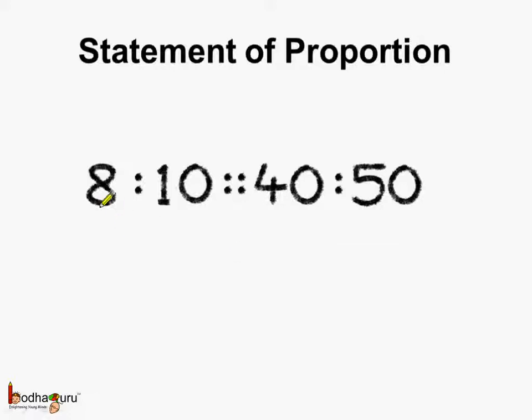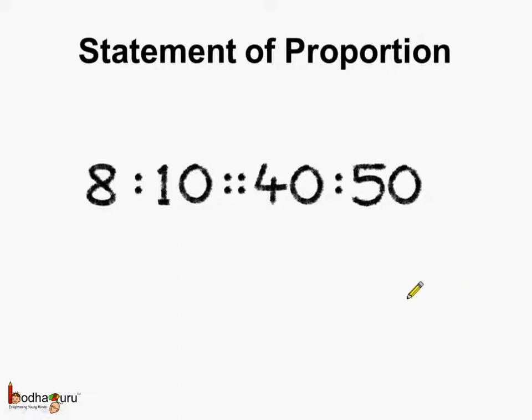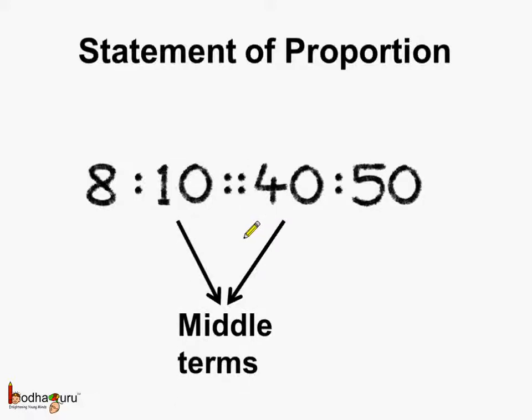And it has 1, 2, 3 and 4 terms. And when we talk of the first term and the fourth term, they are called extreme terms. And what about the second term and third term? These two are lying inside and the second term and the third term are called the middle terms.